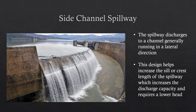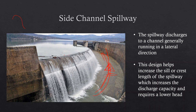Another type is the side channel spillway, where the spillway discharges into a channel running laterally — the spillway discharges in one direction and the channel carries water in the perpendicular direction. One advantage is that we can increase the length of the spillway, which increases its capacity without raising the head much. A longer spillway requires a smaller head to release the same discharge, meaning smaller freeboard is needed in the dam and embankments.